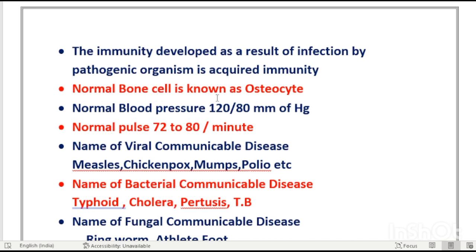Normal bone cell is known as osteocyte. We should know all the terminology: osteocyte, osteoblast, and osteoclast. In other videos, all these terminologies are explained. The normal bone cell is called osteocyte — these are simple but important questions.